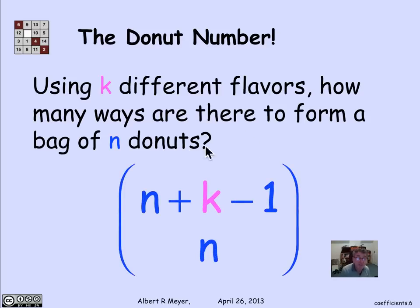Remember, the way we solve that is we take n zeros and sprinkle in k minus 1 ones to delimit the numbers of the k different flavors, and those possible bit sequences of n zeros and k minus 1 ones is exactly the number of selections of n donuts among k different flavors. And there are (n plus k minus 1) choose n of them.